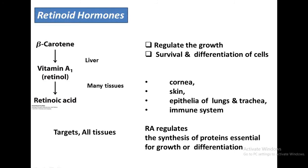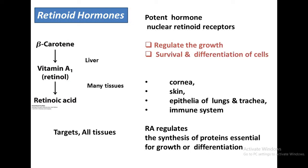Next are the retinoid hormones. These are potent hormones that have nuclear retinoid receptors, and they regulate growth, survival, and differentiation of cells. Their synthetic pathway begins with the precursor beta-carotene, which is converted in the liver into vitamin A1 — retinol.